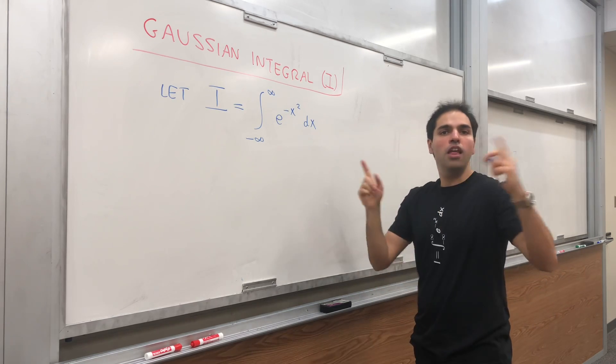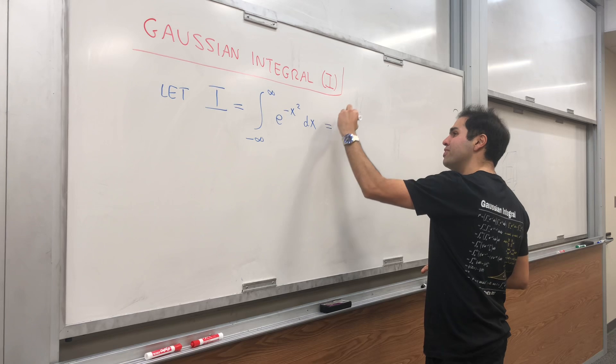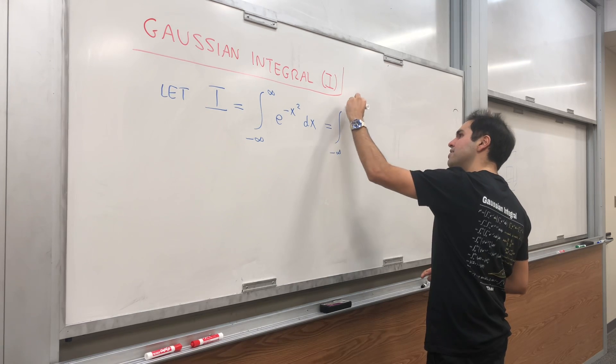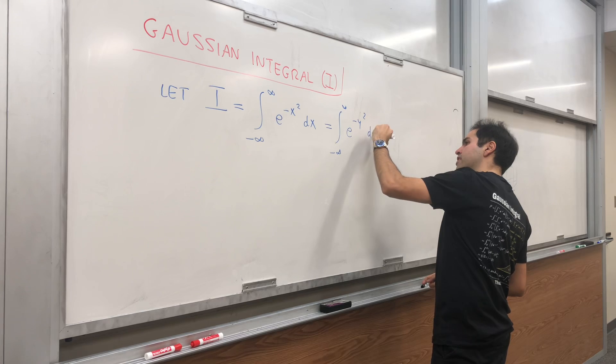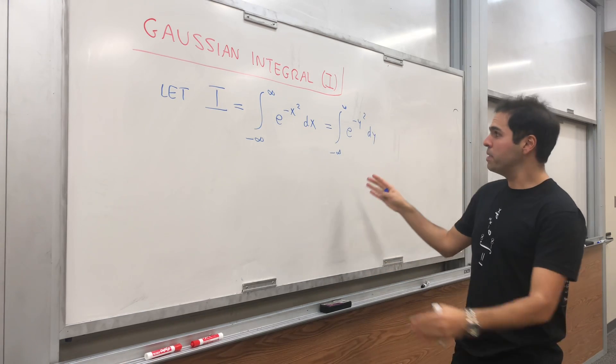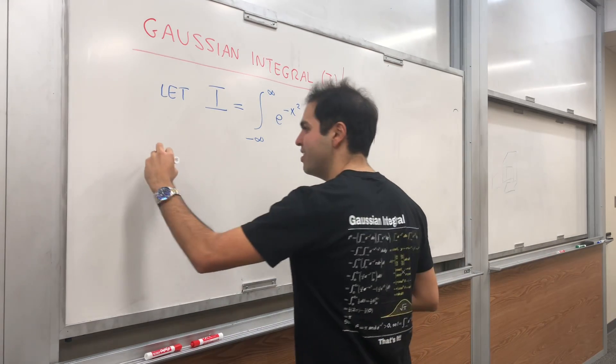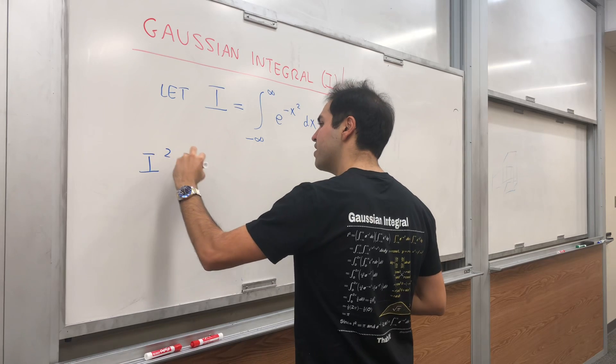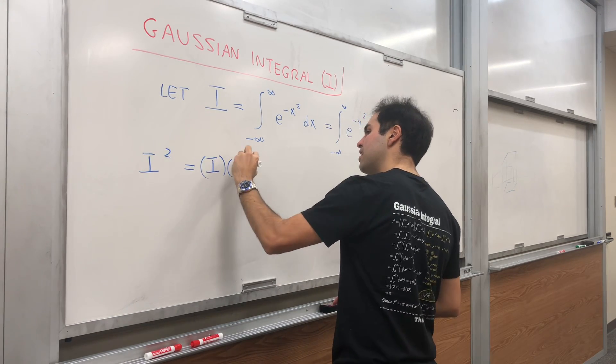So it's also equal to the integral from minus infinity to infinity of e^(-y²) dy. Why is this important? Because it turns out you can multiply both of them and you get a nice simplification. So I² equals I times I.